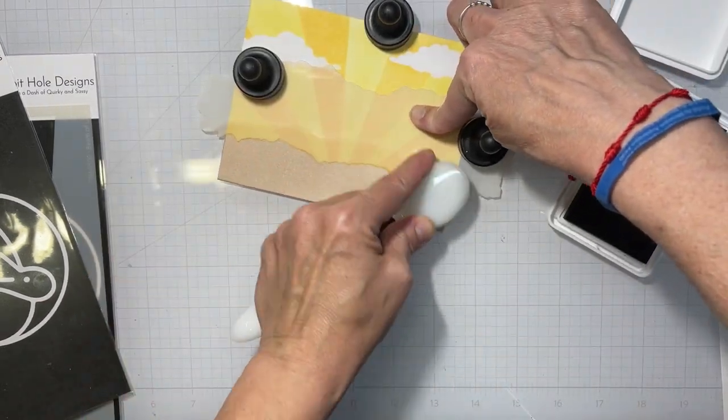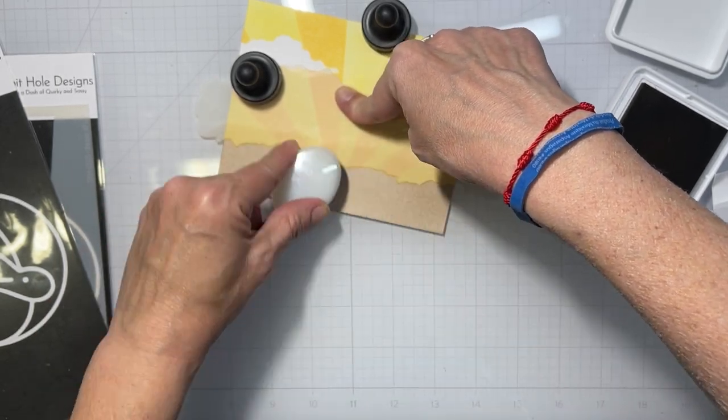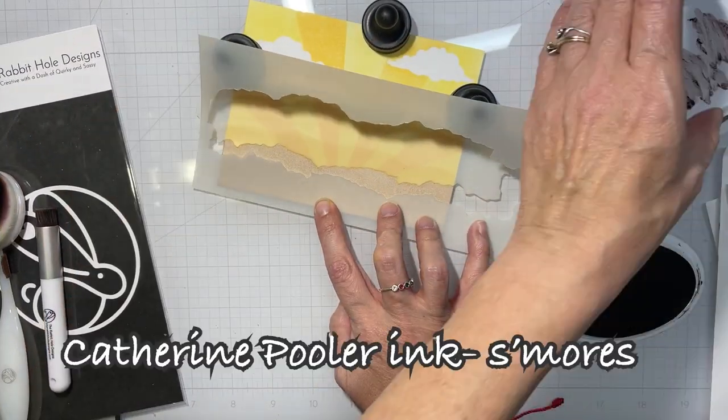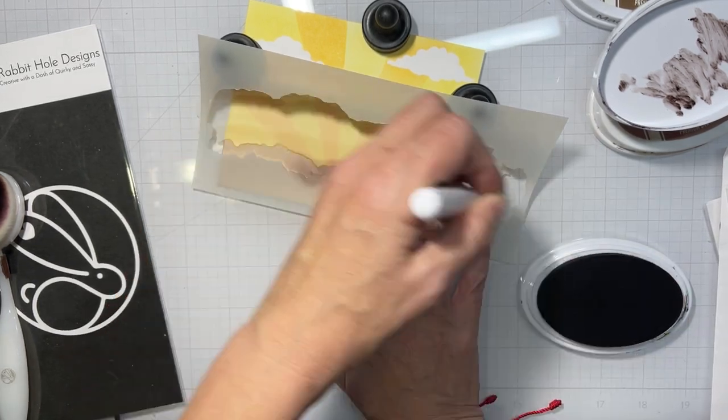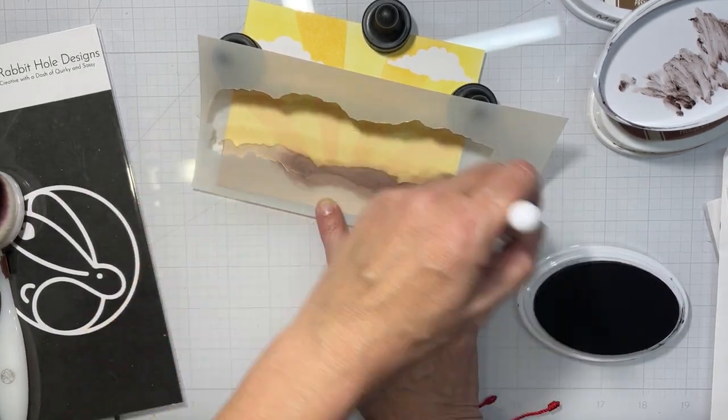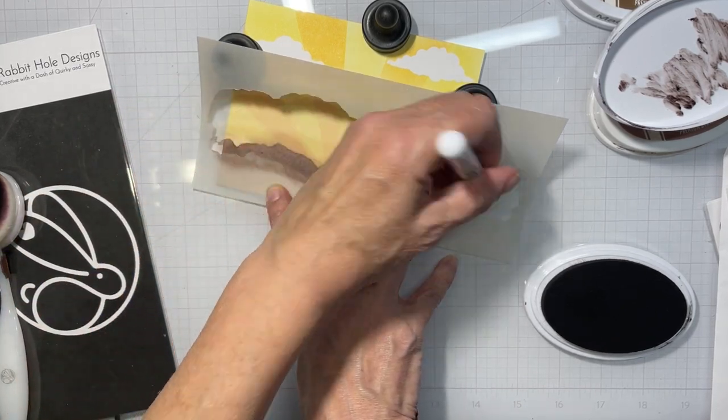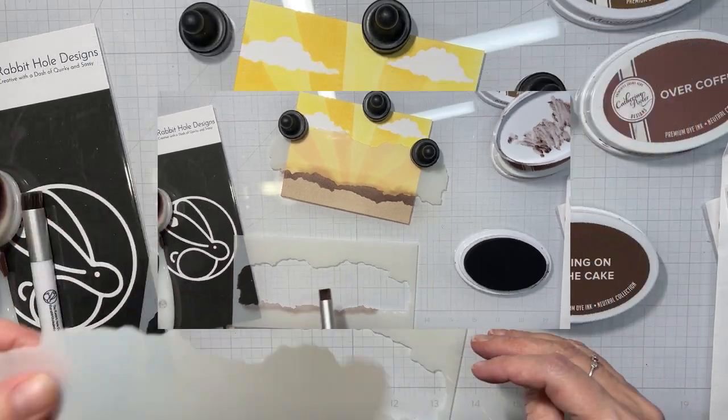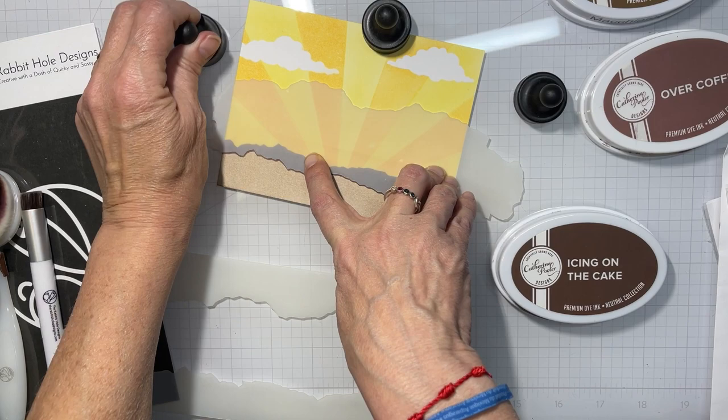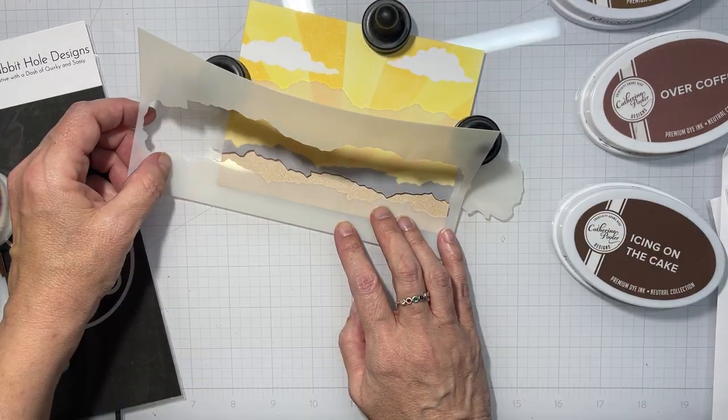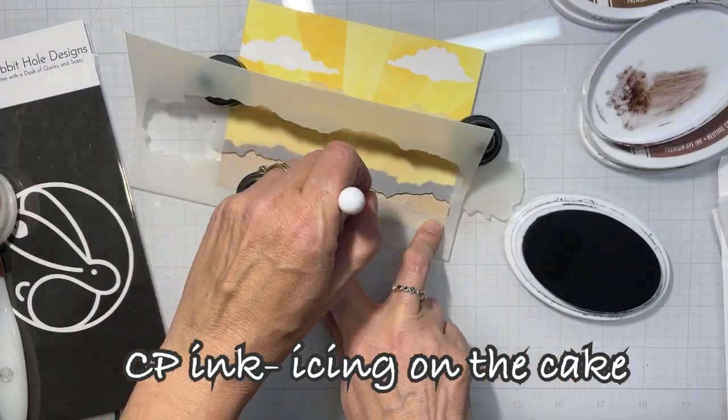We're going to go in with some, I believe this is Cappuccino, a Simon Says Stamp positively saturated ink pad that I got in a kit over Christmas. And then I'm coming in with some browns from Kathryn Pooler, using different parts of that torn paper stencil to make dirt in our ground.